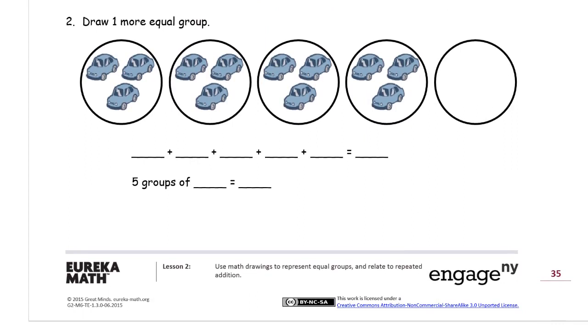And now it says we need to draw one more equal group. So I'm going to draw some cars here. You don't have to draw cars. If you just want to draw circles, that'll be fine. It kind of looks like a dolphin. I'm not really a great artist here, but I'm trying.